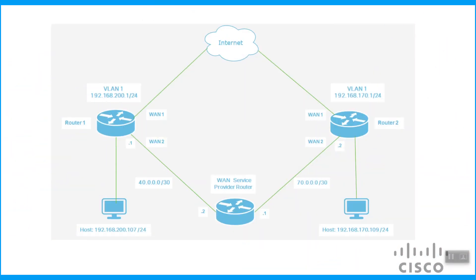Before we start, we'll need a roadmap of our network. This is the network topology we'll use for this example. As we can see, there are two routers: Router1 and Router2. The WAN1 interface of both routers is connected to the internet, which allows the VLAN1 traffic of each router to have internet access.